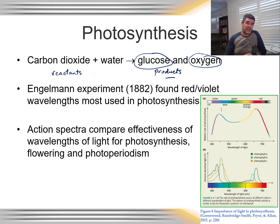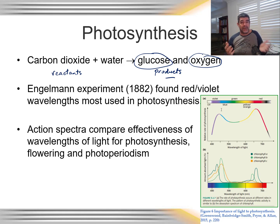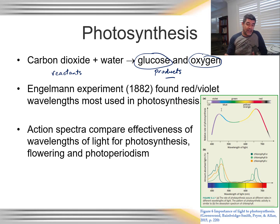Photoperiodism refers to the changing length of the days. At the moment, as we lead into winter, the days are getting very short and it gets dark quite early, whereas in summer the day length is much longer. Plants are sensitive to these differences in how much sunlight there is in a given day, and therefore a lot of the timing of their processes, including things like flowering, link into that. Another process you could also investigate is phototropism.